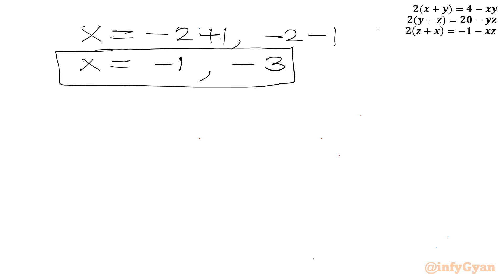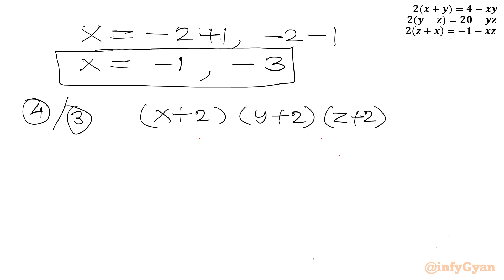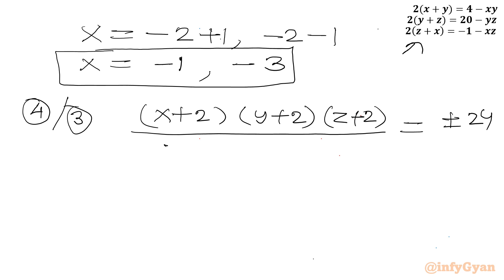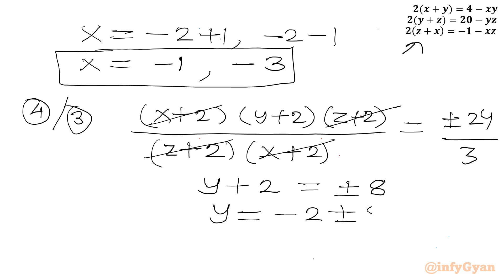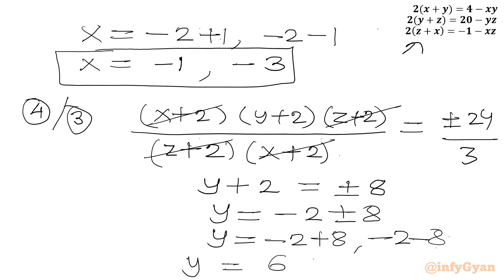Now for the y variable, I will divide equation 4 by equation 3: (x+2)(y+2)(z+2) divided by (z+2)(x+2) = ±24 divided by 3. After cancellation, y+2 = ±8, so y = minus 2 ± 8. This gives y = 6 or y = negative 10.